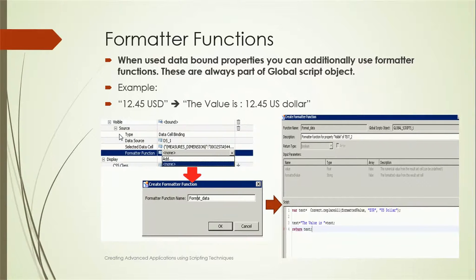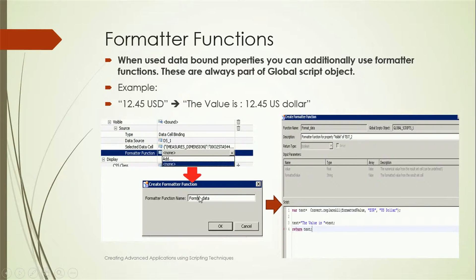Formatter functions are another feature for formatting how data looks when used in data-bound properties. They are always part of global script objects. For example, if data from the database is '12.45 USD' but you want to display it as 'The value is 12.45 USD', you add a formatter function via the text properties, give it a name, and write: var text = 'The value is ' + value; return text. This returns the formatted display string.